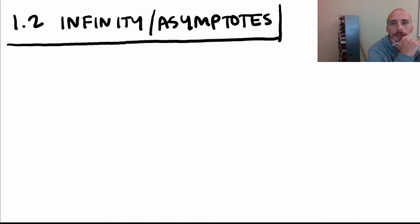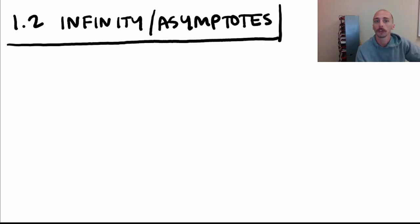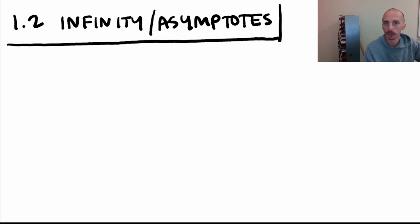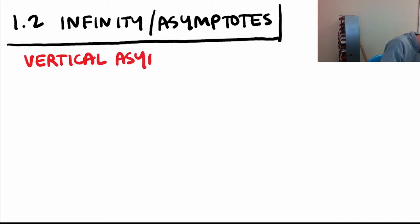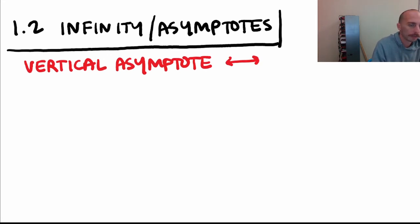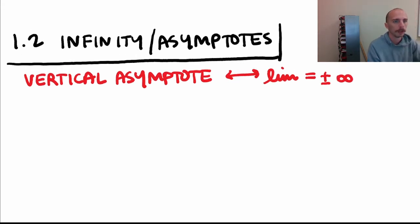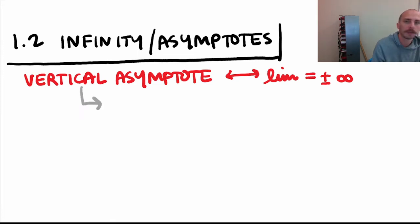In 1.2 we talked about limits that came back infinity, which correspond to horizontal and vertical asymptotes. The cause of a vertical asymptote is always division by zero — specifically, non-zero over zero after any cancellation of common factors on top and bottom.